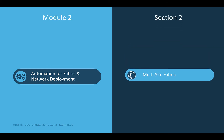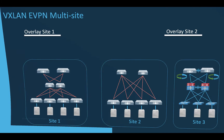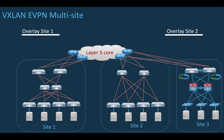Let's talk about the multi-site fabric deployment using DCNM in a few clicks. But before, let's have a look at the solution itself. VXLAN EVPN multi-site is a solution to interconnect two or multiple VXLAN EVPN fabrics in a scalable fashion over IP-only networks in order to extend layer 2 and layer 3 networks using the same single transport.